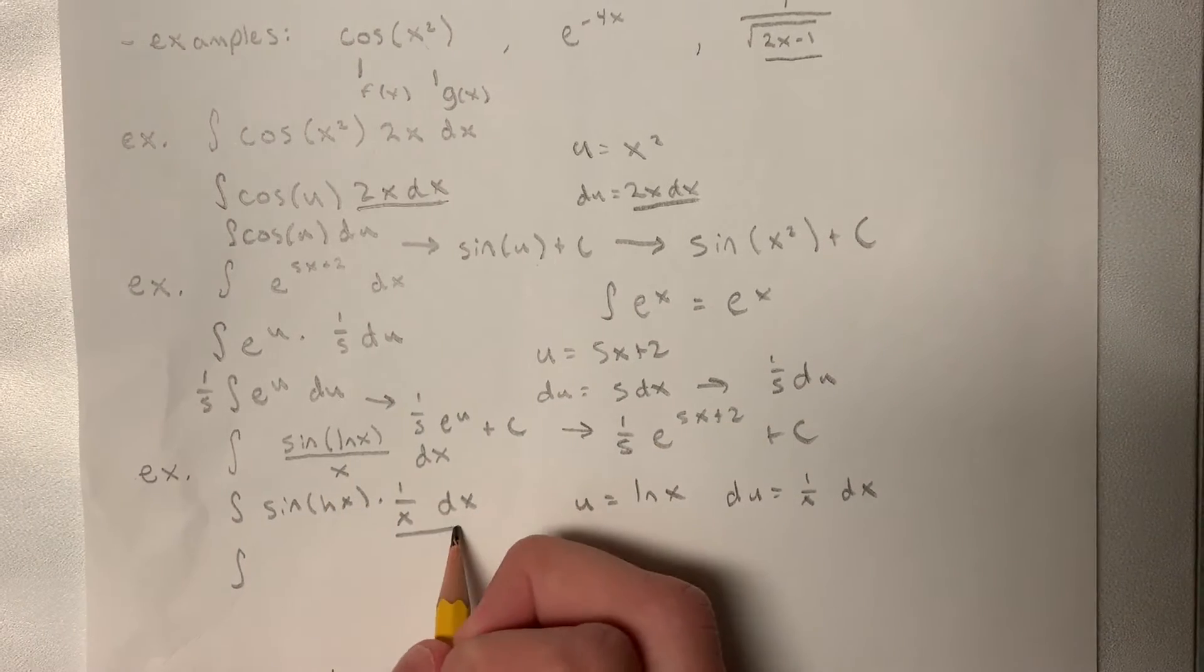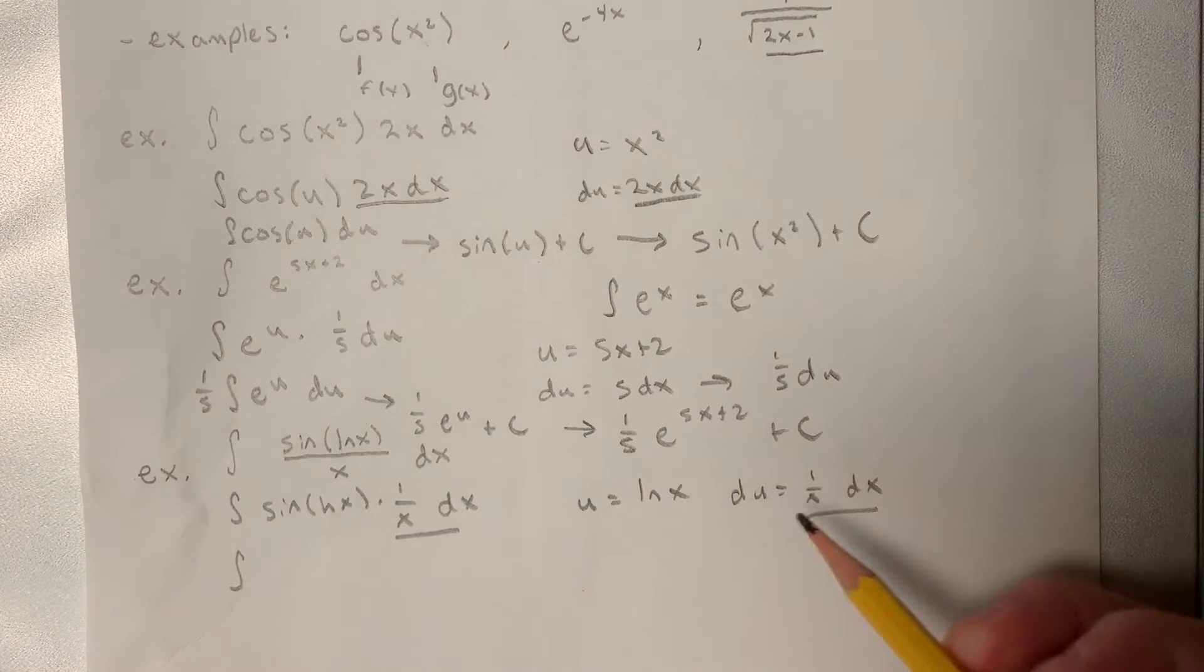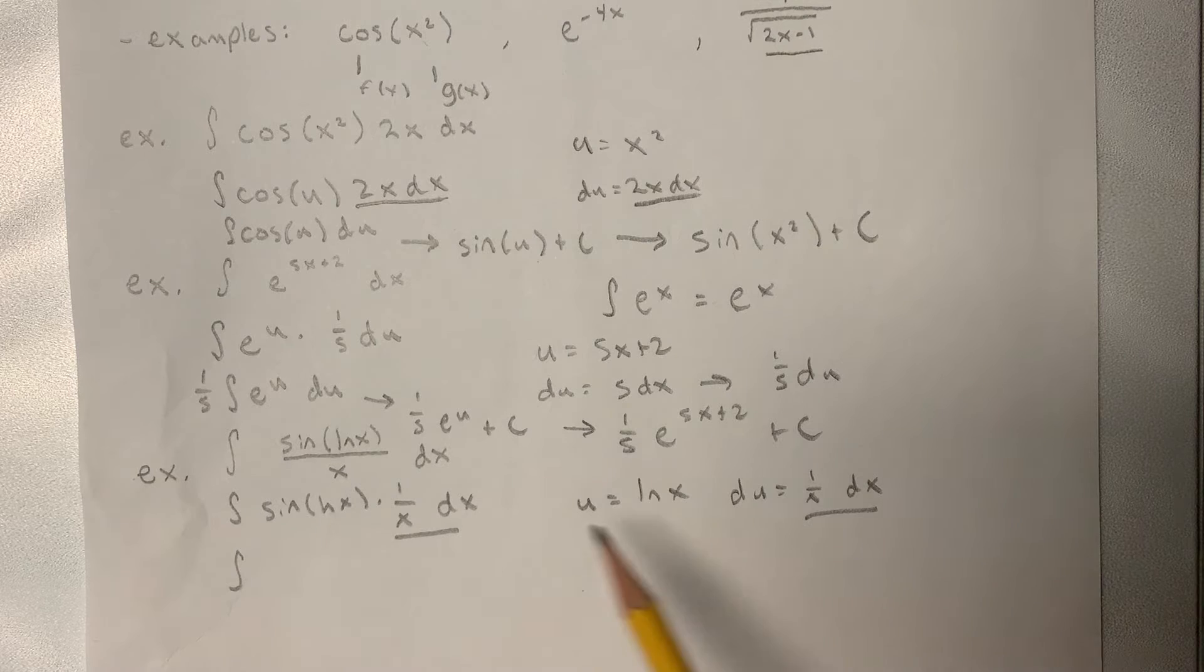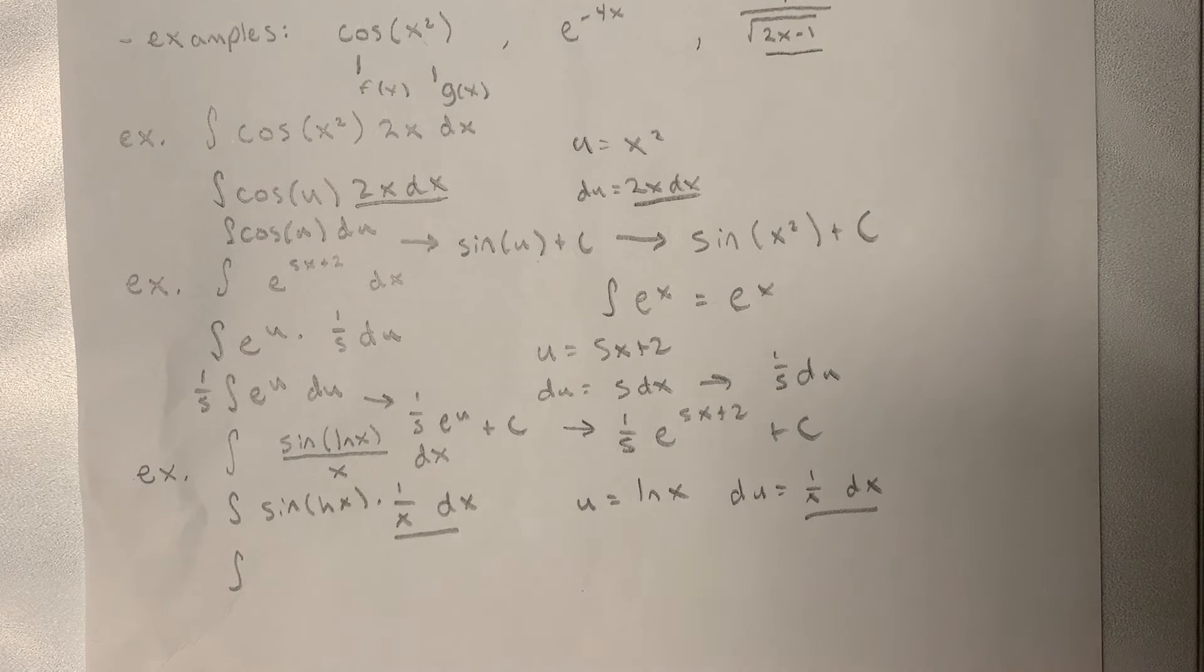Which would make our du 1 over x dx. Okay, as you can see, once again our du is simply the derivative of u, which happens to be 1 over x dx, which cancels out completely. That will happen in most problems, or it will almost completely cancel out.